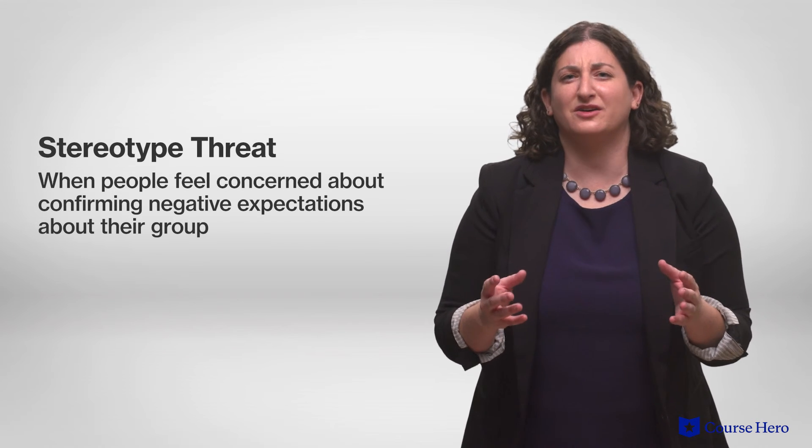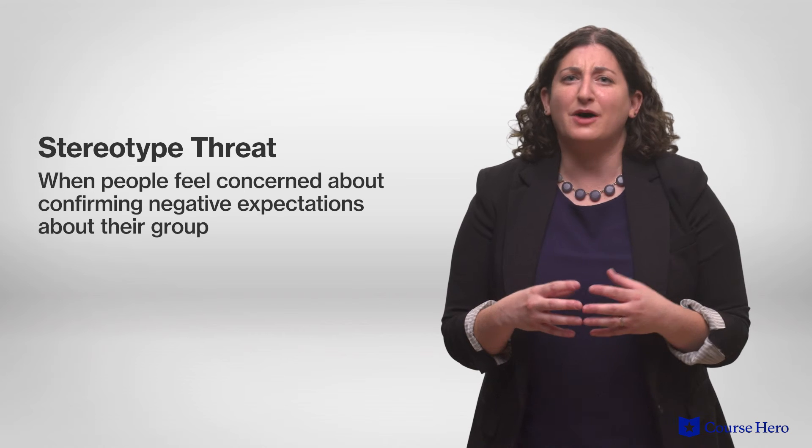Intelligence test scores produce relatively small differences across genders, race, or ethnic groups. In fact, variability within a group far exceeds variability between groups. However, stereotype threat can have a big impact on test results. Stereotype threat occurs when people feel concerned about confirming negative expectations about their group, and subsequently have a higher potential of performing poorly on tests because of this apprehension. When test conditions trigger awareness of negative stereotypes, like the idea that women aren't good at math, people tend to perform more poorly than they would otherwise.